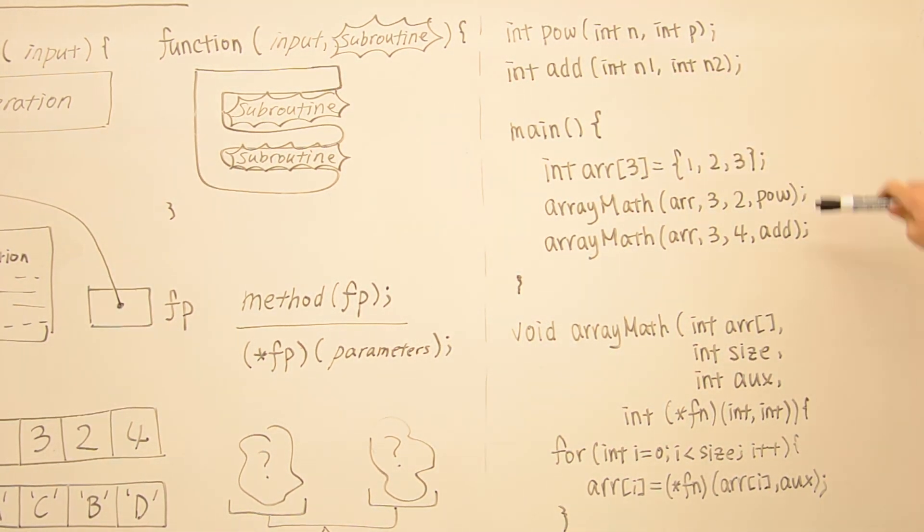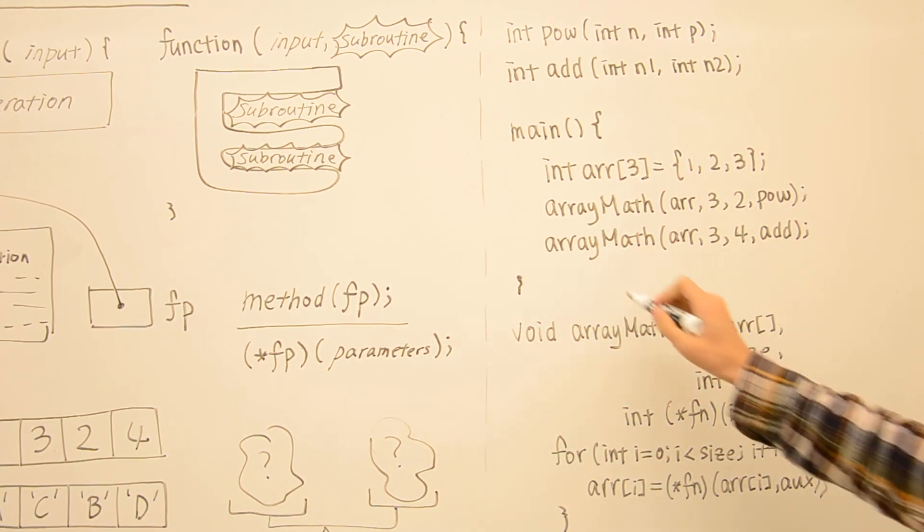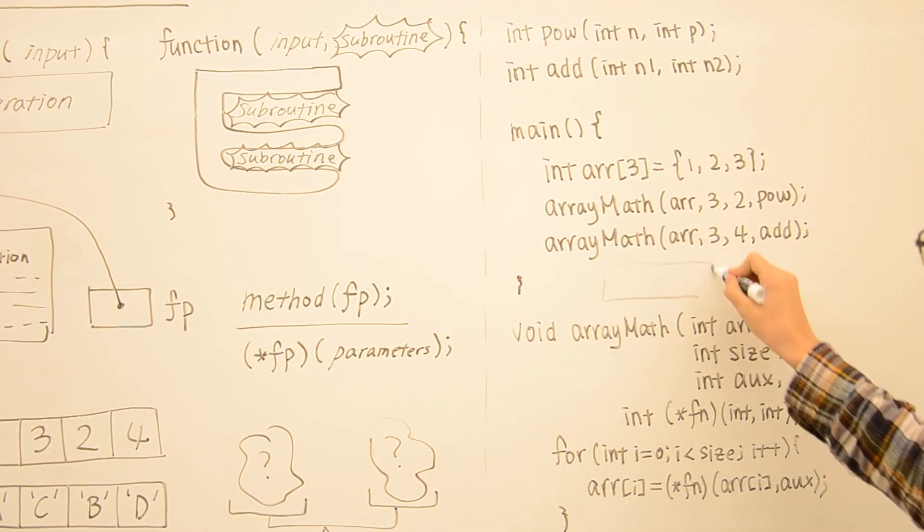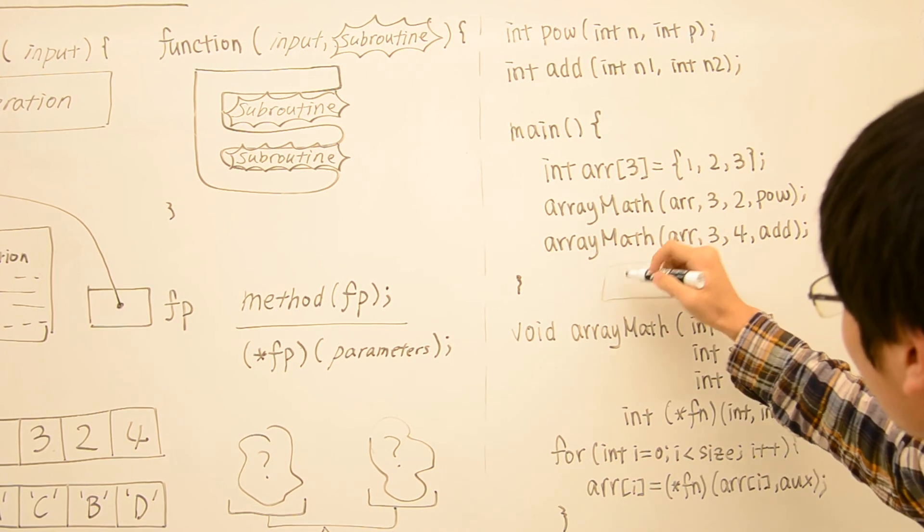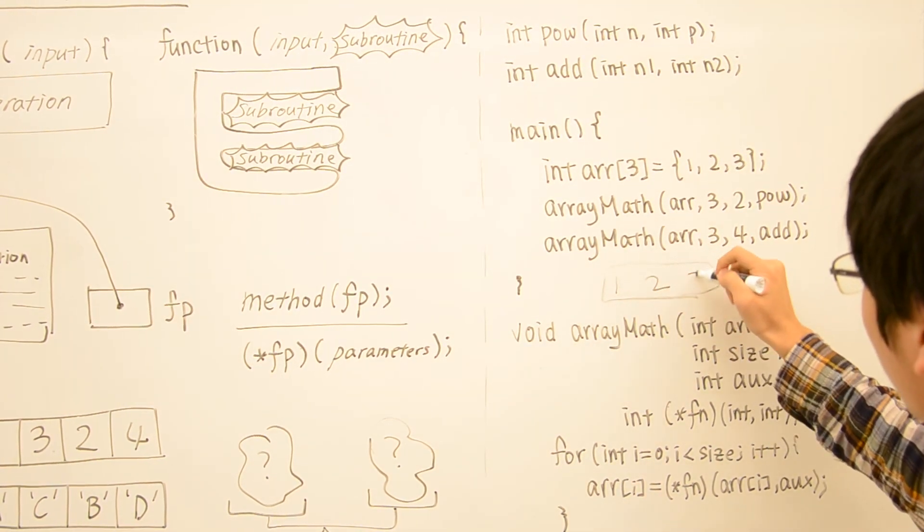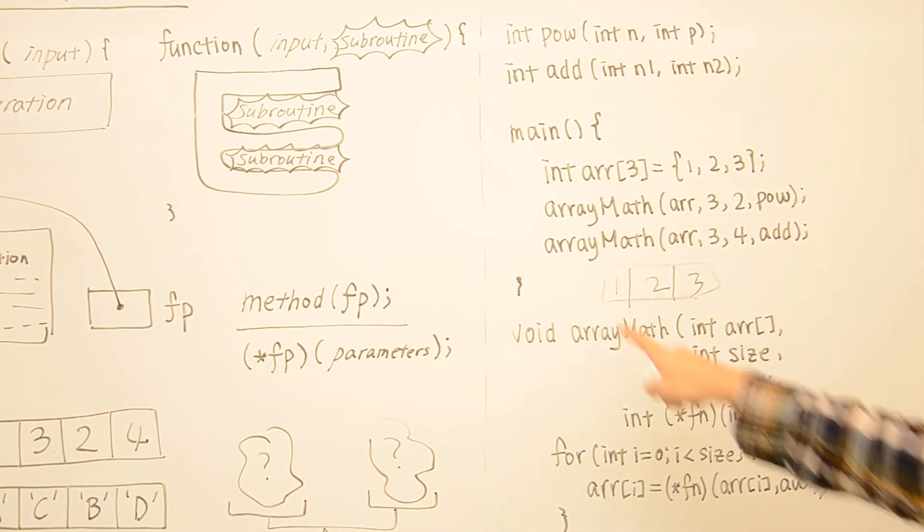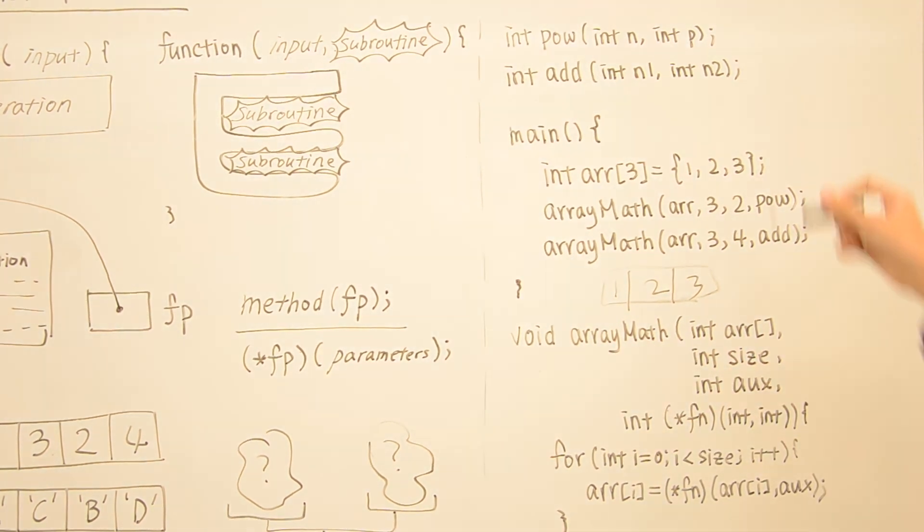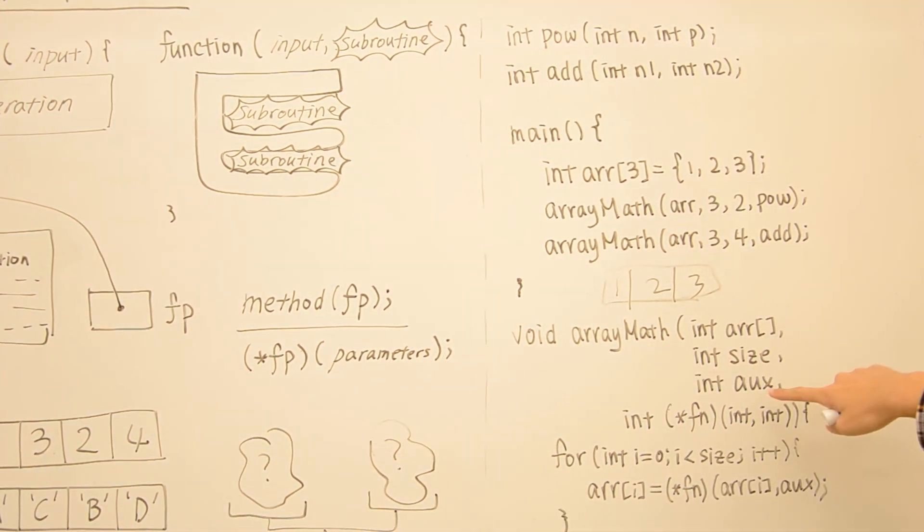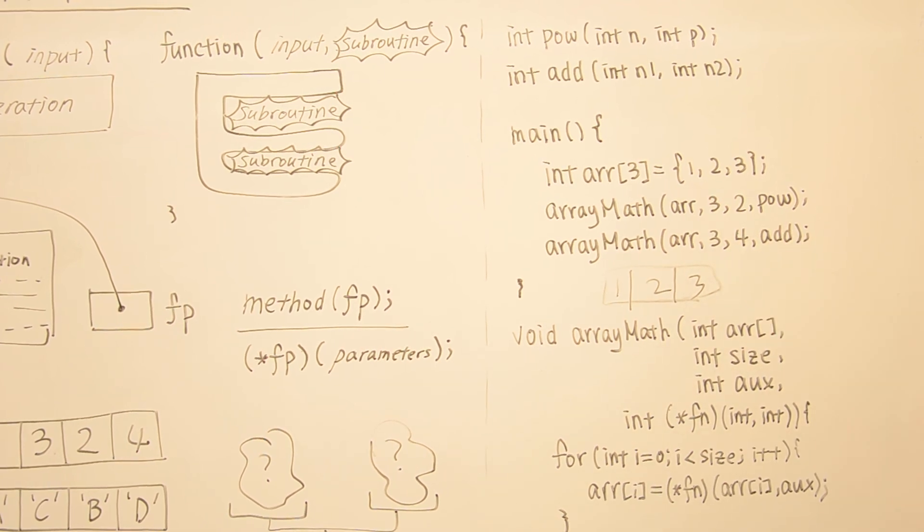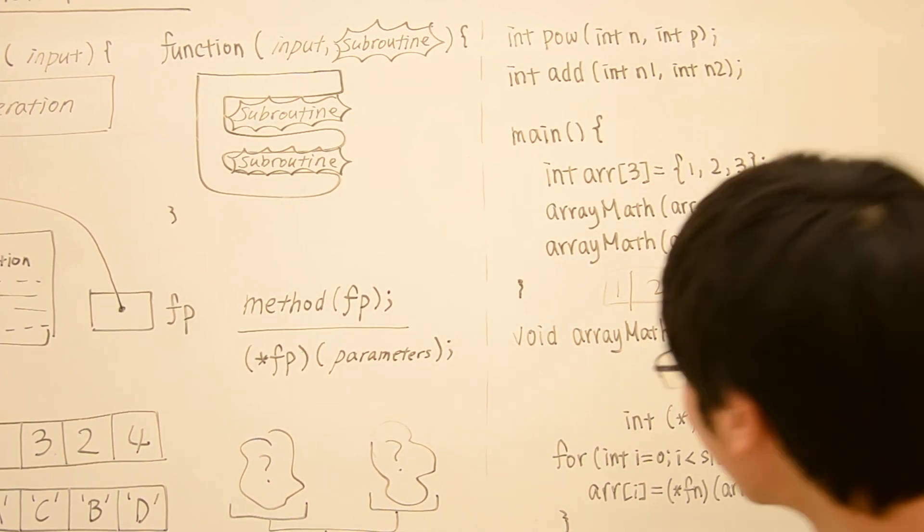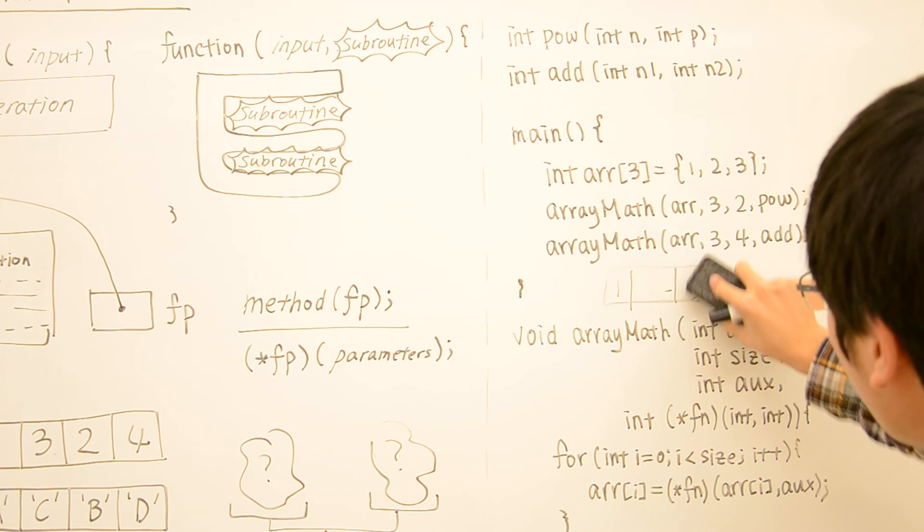So after calling this method, what happens is we have an array of 1, 2, 3, and on each element we call this method, pow, with the auxiliary data of 2. So that makes it 1, 4, and 9.